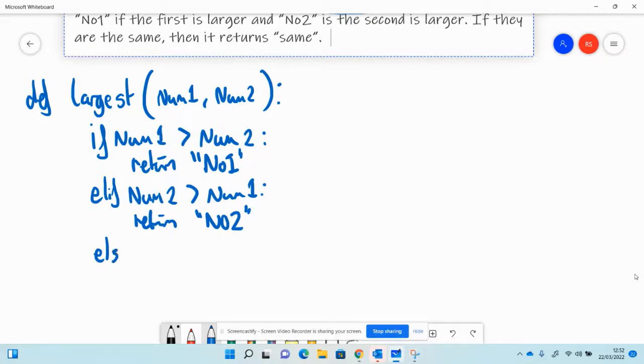And finally, on our else, if number one is not bigger than number two and number two is not bigger than number one, then they must be the same. So we're going to return same like that.